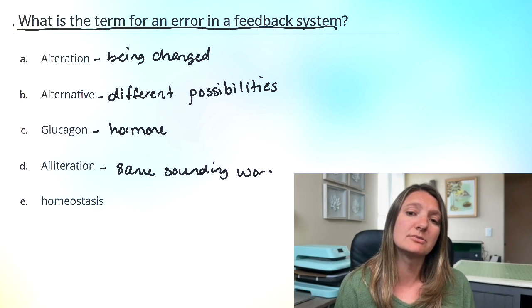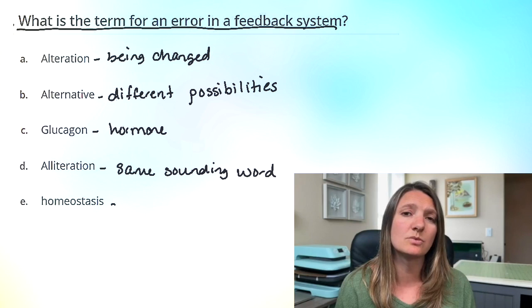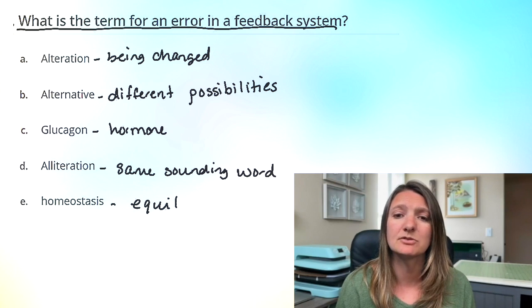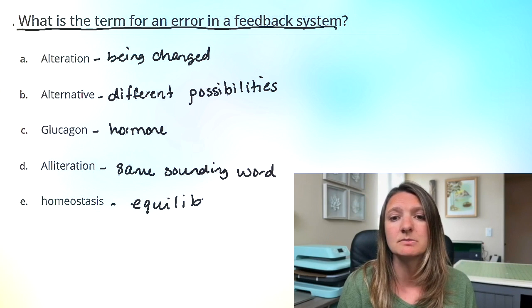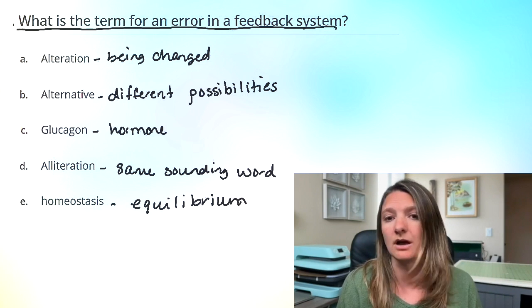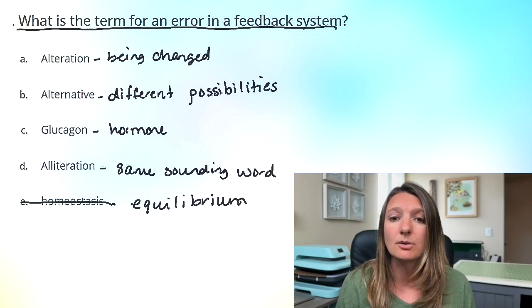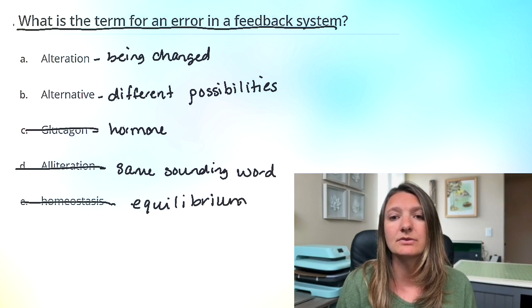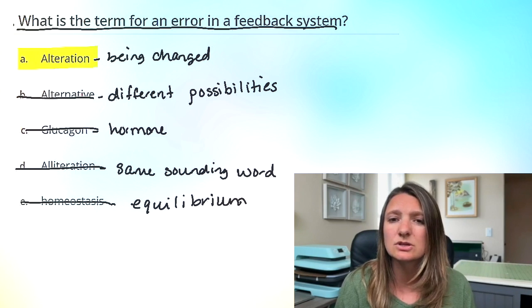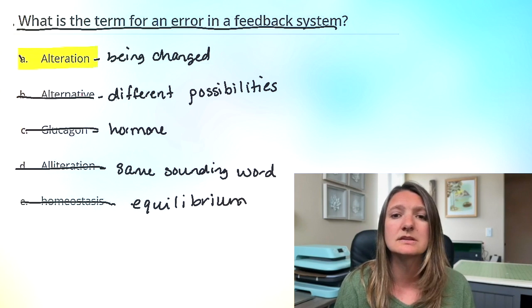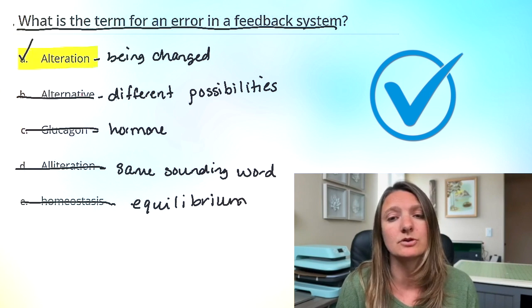Alliteration is also kind of randomly thrown in there — that's the same sounding words at the beginning. And homeostasis is going to be any equilibrium you have in the cell. Let's eliminate the three we know are not it: homeostasis, alliteration, and glucagon. We're left with alternative and alteration. Between those two, alteration is the most correct answer for the error in a feedback system.